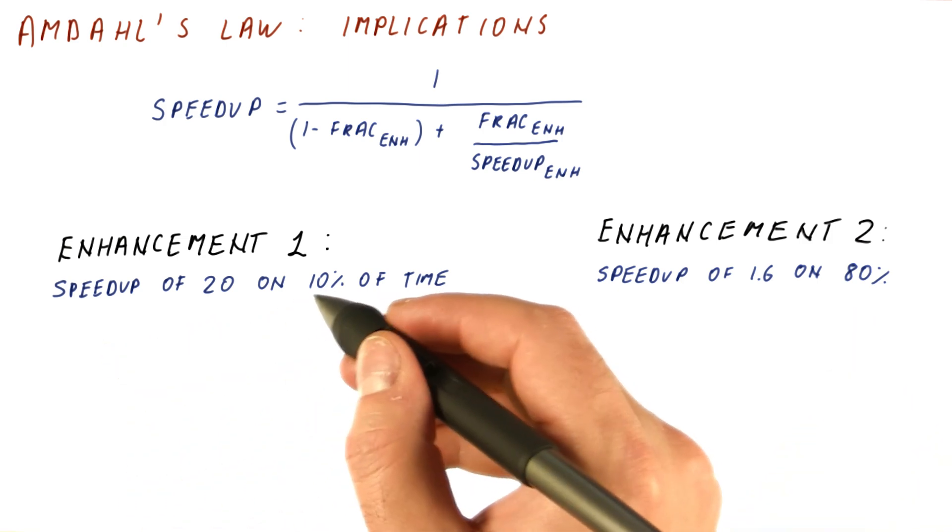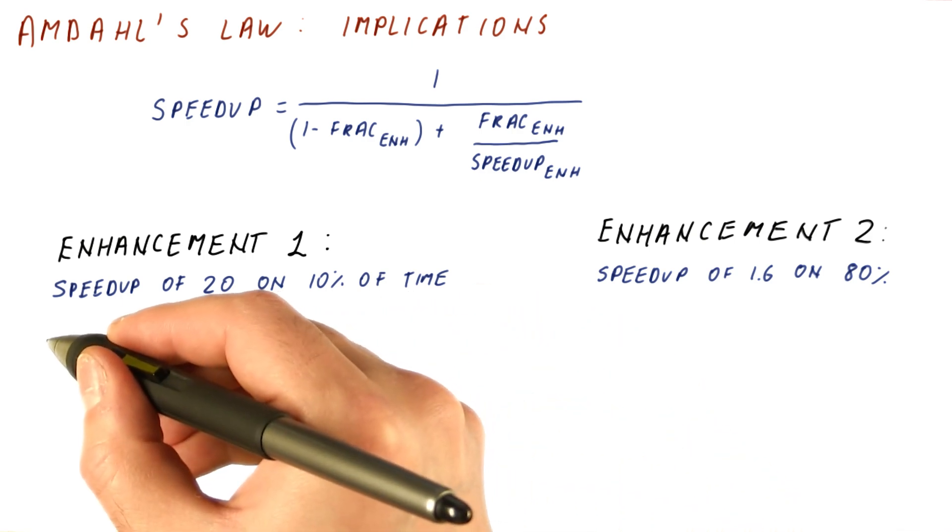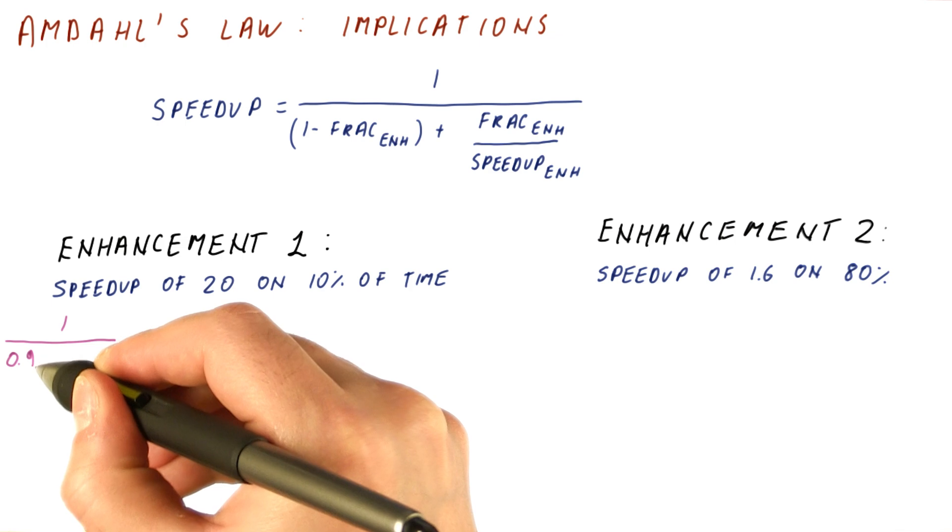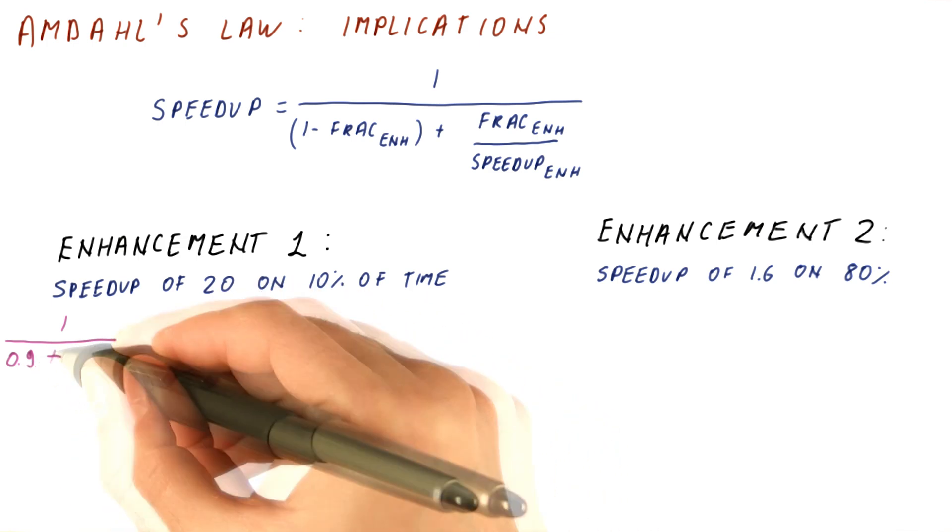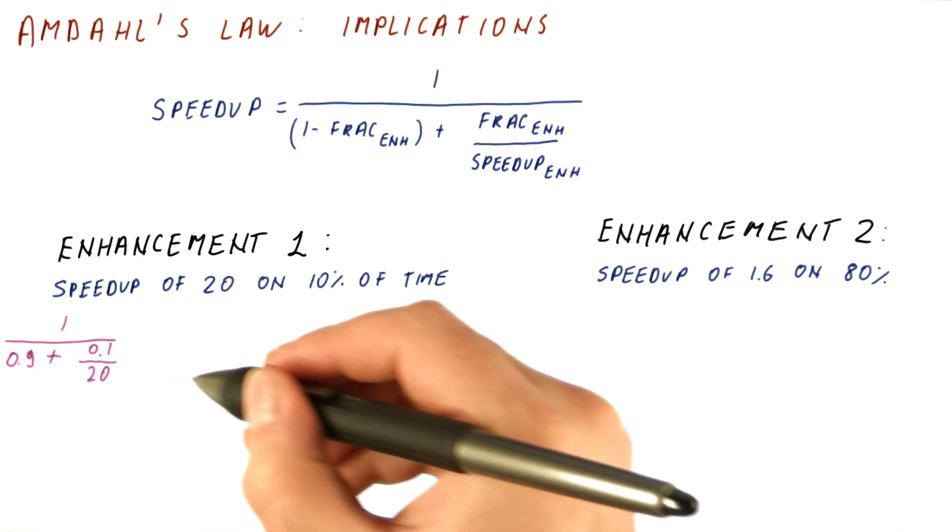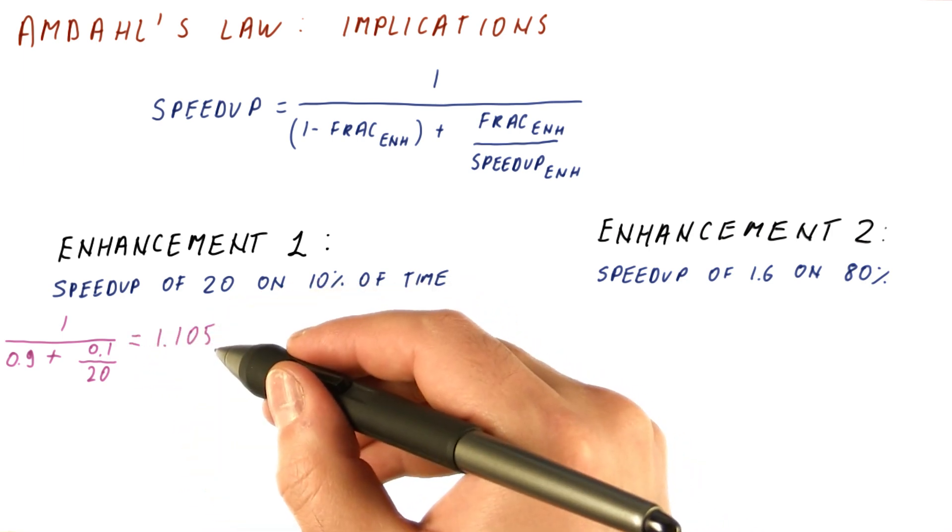Using Amdahl's law, we can now compute the overall speedup resulting from these enhancements. Here we have 1 over, unaffected is 90% of execution time. Affected is 0.1, and it's shorter by 20 times. You can compute this and get 1.105.